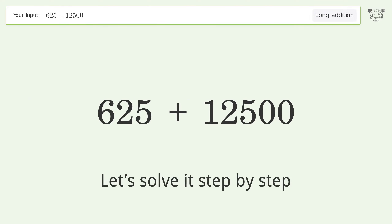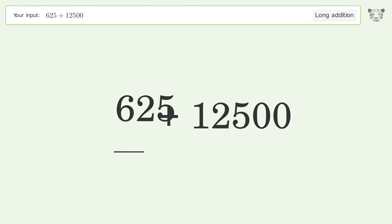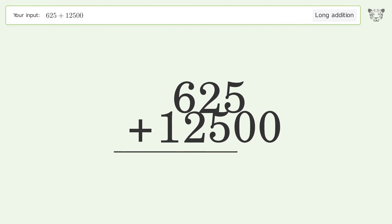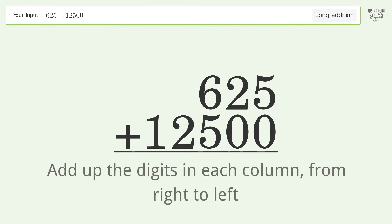Let's solve it step by step. Rewrite the numbers from top to bottom, aligned by their place values. Add up the digits in each column from right to left.